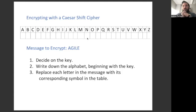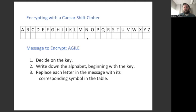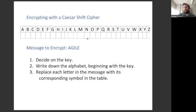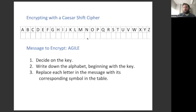How to encrypt a message using a Caesar cipher. First, decide on a key. The key can be any letter of the alphabet. Then write down the alphabet, beginning with the key you've chosen. Finally, replace each letter in the message with its corresponding symbol in the table.